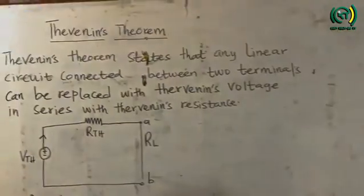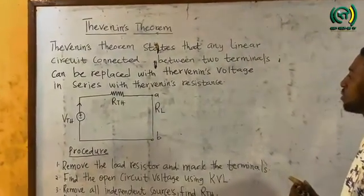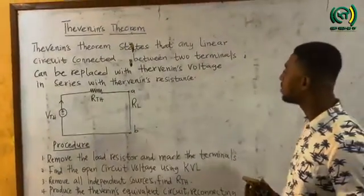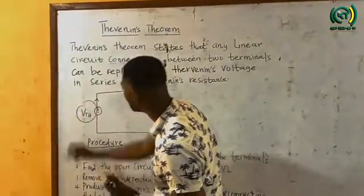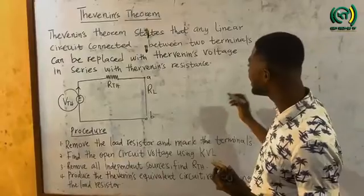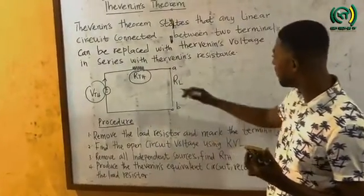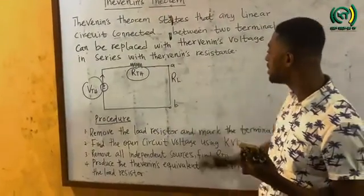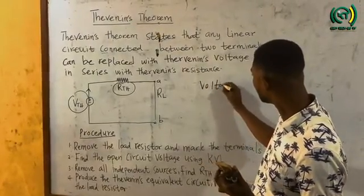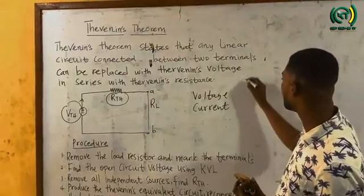When we look on the board, Thevenin's theorem states that any linear circuit connected between two terminals can be replaced with Thevenin's voltage VTH in series with Thevenin's resistance RTH. VTH is the voltage seen across terminals A and B. RTH is calculated as the total resistance seen between terminals A and B when all independent sources are disconnected. We can disconnect a voltage source by replacing it with a short circuit.